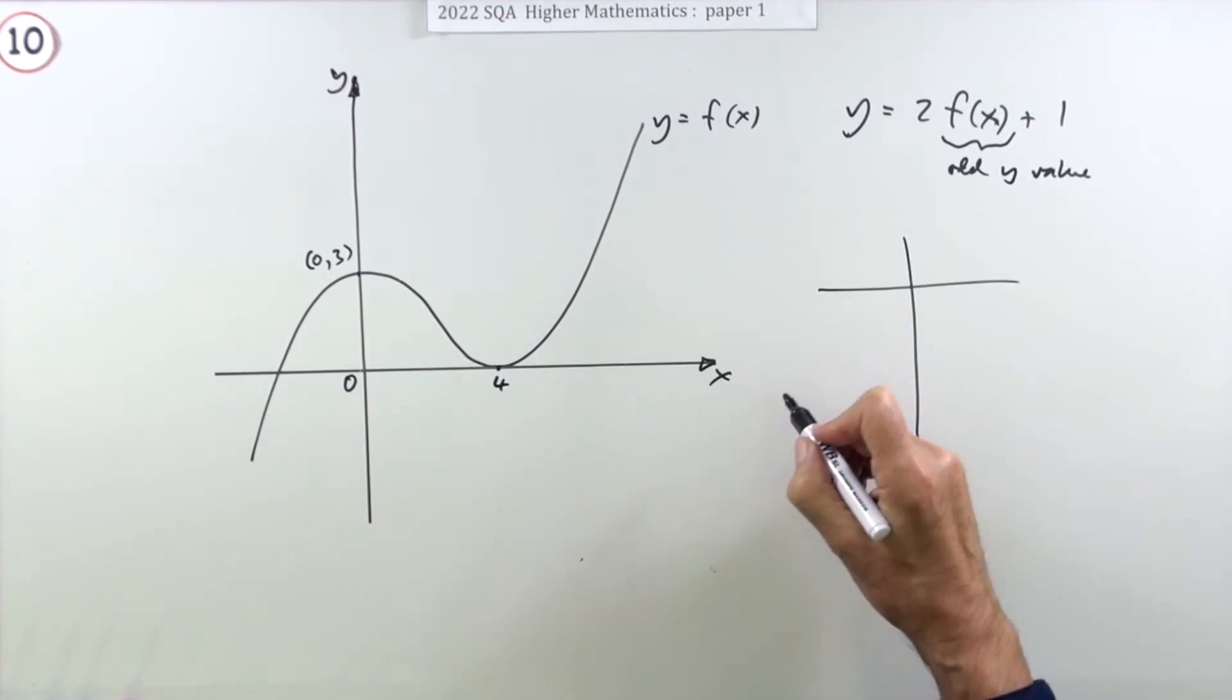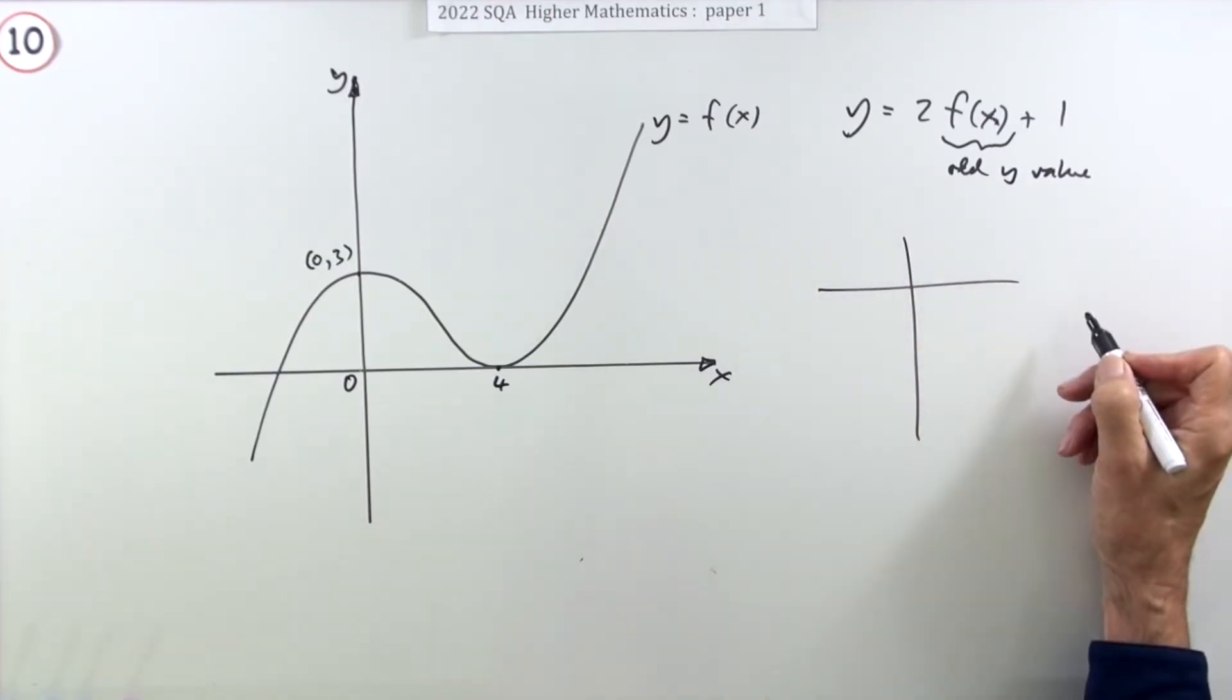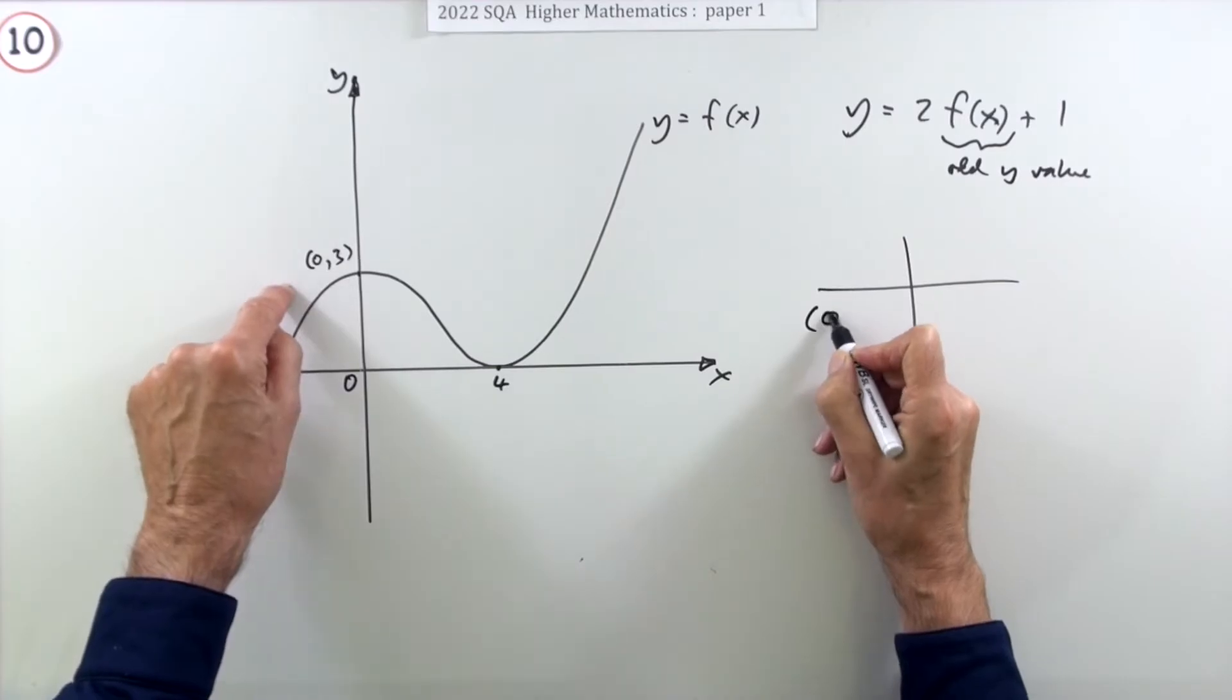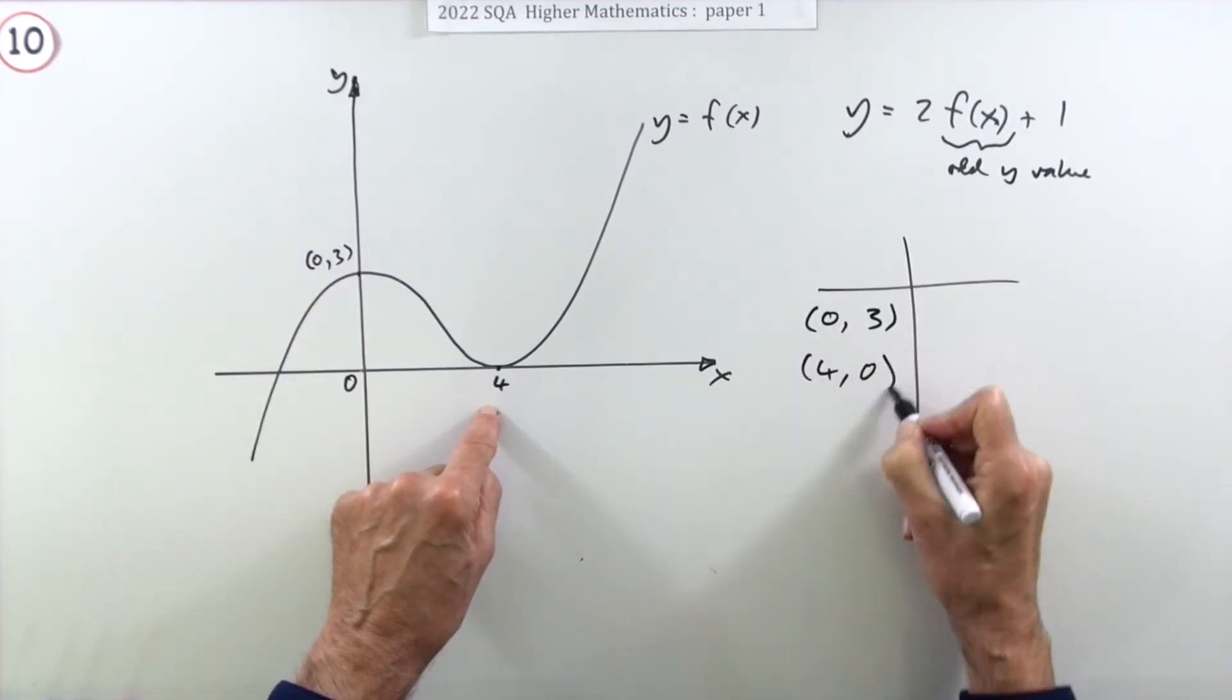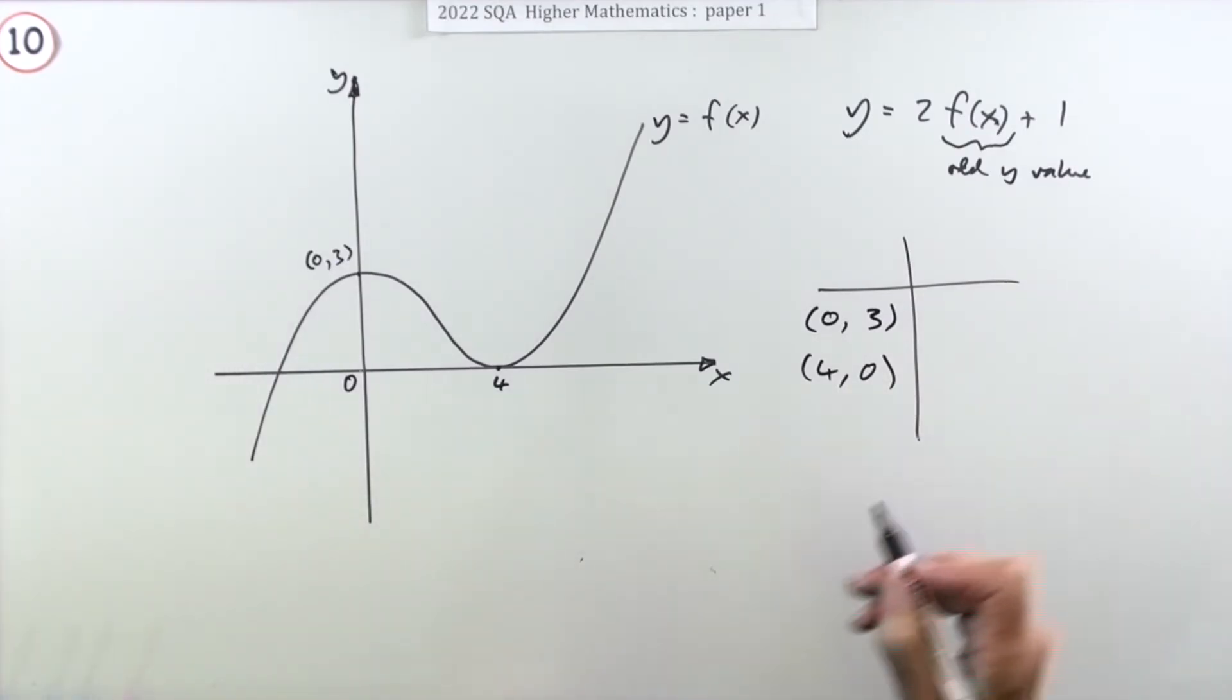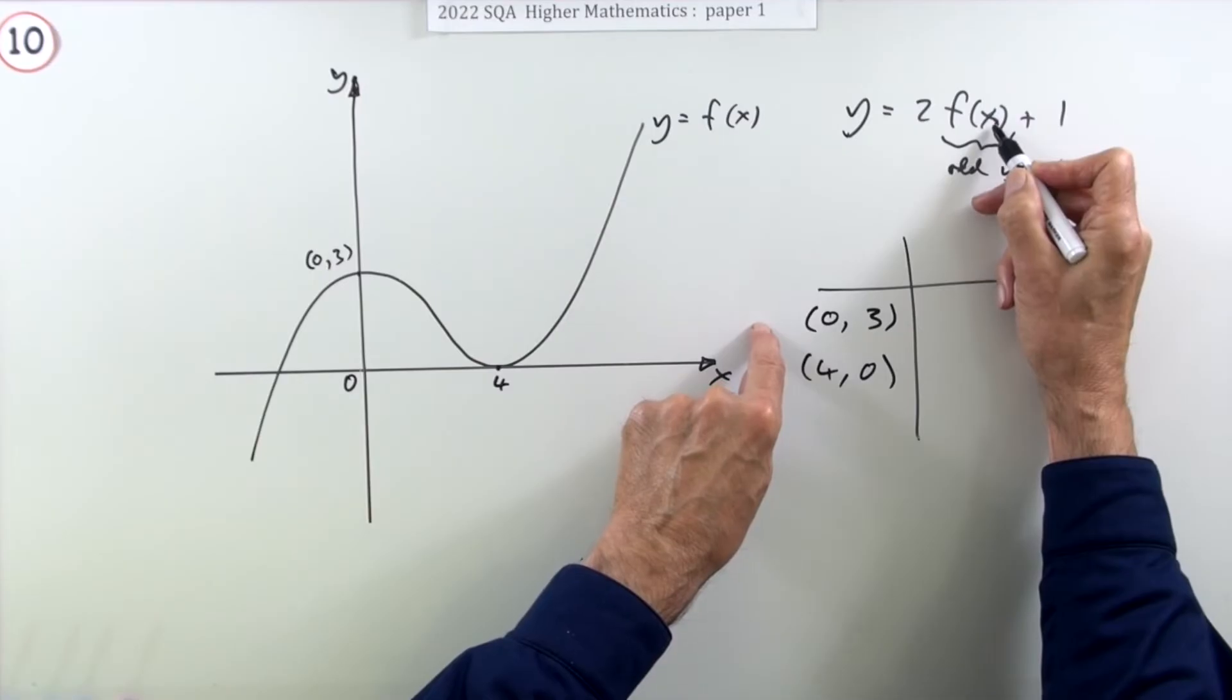Or you can make up a table. You can make up a table of the old one and the new one, the original point and the new point. So this point here zero three and this point here four zero, because those are the only points I've got. Where do they go? Well nothing happens to the x's.